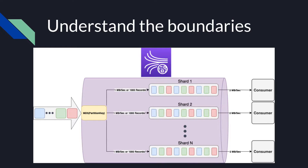Before jumping into details, it's important to understand the boundaries. When reading from a Kinesis data stream, it's important to know that a Kinesis stream is composed of shards, and that each shard in your stream comes with a limited throughput. You can write 1 MB or 1000 records of data per second per shard, while on the way out, each shard provides up to 2 MB of data per second by default.